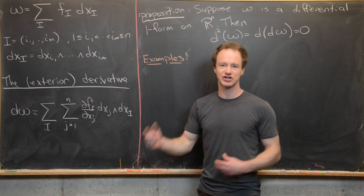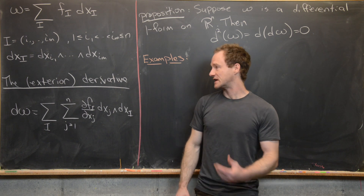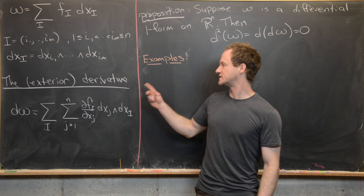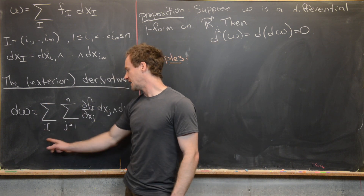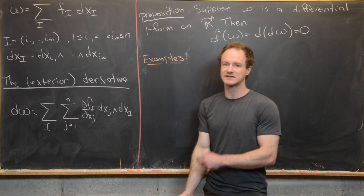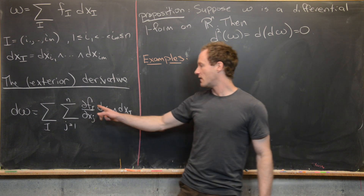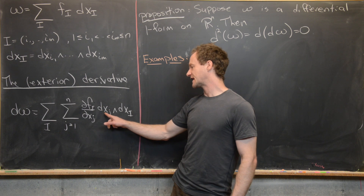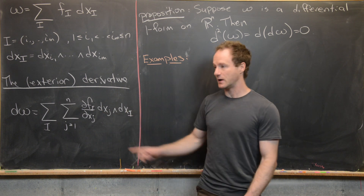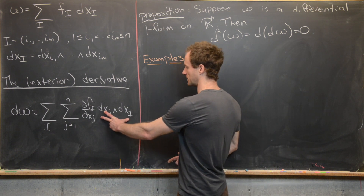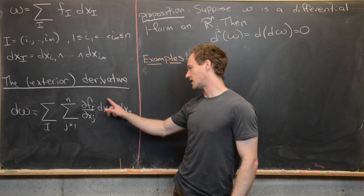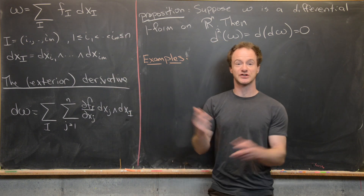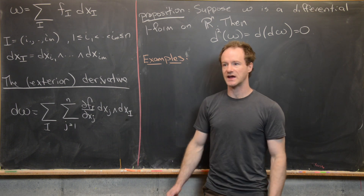In previous videos we highlighted the action of that on a vector in the tangent space at a certain point. Earlier we came up with the exterior derivative, with the definition: d omega is the sum over the multi-index, and inside that sum we have the sum from j equals 1 to n of the partial of f_i with respect to x_j, then taking the new one-form dx_j and wedging it into dx_i. This is an elementary m+1 form. Note that these f_i's are smooth functions — infinitely differentiable on an open set in R^n.